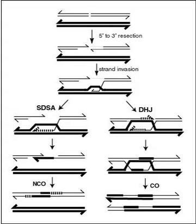Chromosomal crossover involves recombination between the paired chromosomes inherited from each of one's parents, generally occurring during meiosis. During prophase I, the four available chromatids are in tight formation with one another. While in this formation, homologous sites on two chromatids can closely pair with one another and may exchange genetic information, because recombination can occur with small probability at any location along a chromosome. The frequency of recombination between two locations depends on the distance separating them.